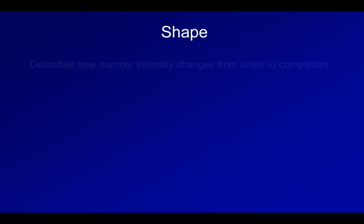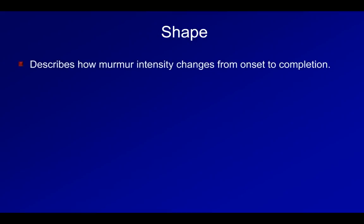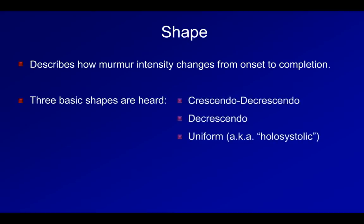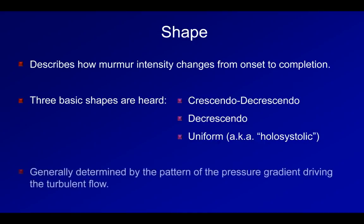The shape of a murmur describes how its intensity changes from onset to completion. There are three basic shapes: crescendo-decrescendo, decrescendo, and uniform — also called holosystolic when occurring during systole. In general, crescendo-decrescendo and uniform murmurs are heard during systole, while decrescendo murmurs are heard during diastole. The shape of a murmur is generally determined by the pattern of the pressure gradient driving the turbulent flow, with the loudest segment occurring at the time of the greatest gradient since this will be the point of the highest velocity.